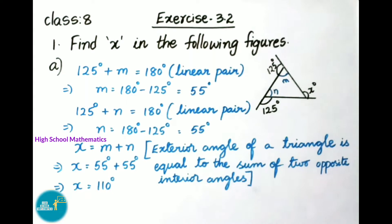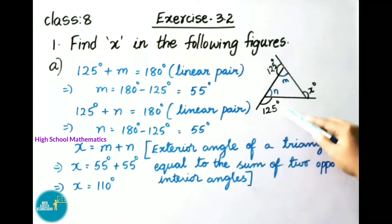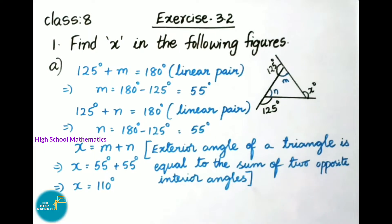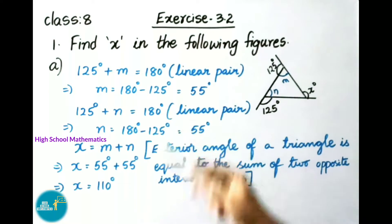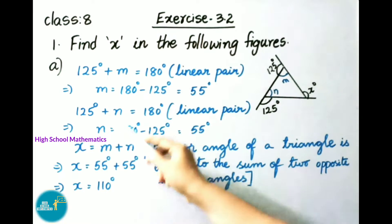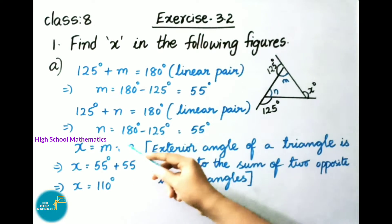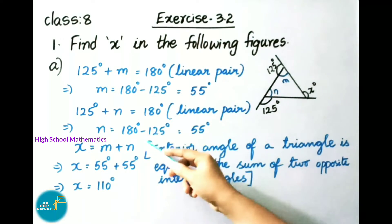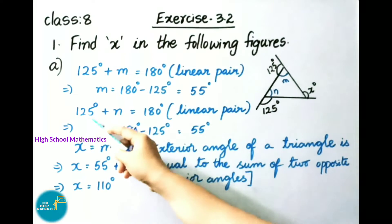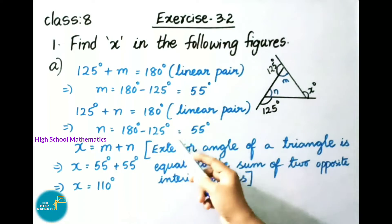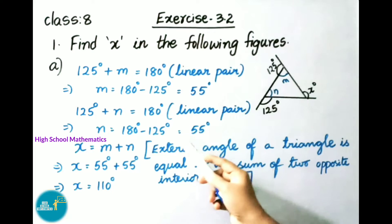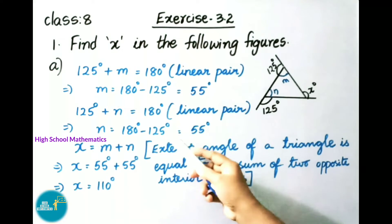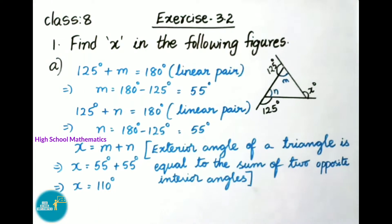Now we shall find N value. Here 125 and N are both a linear pair. So 125 plus N equals 180 degrees. N equals 180 minus 125, that is 55 degrees.